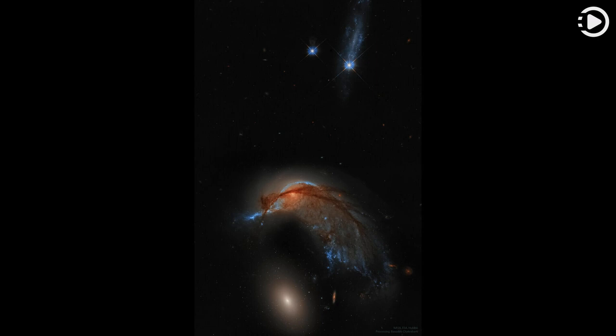Behind filaments of dark interstellar dust, bright blue stars form the nose of the hummingbird, while the center of the spiral appears as an eye.